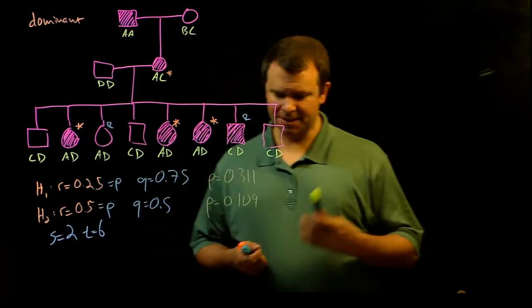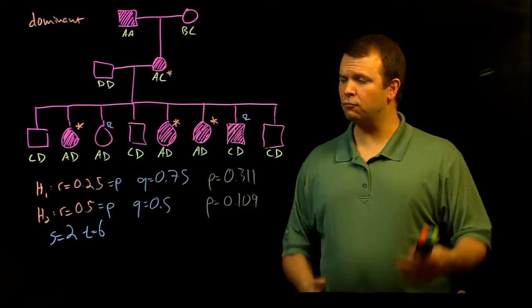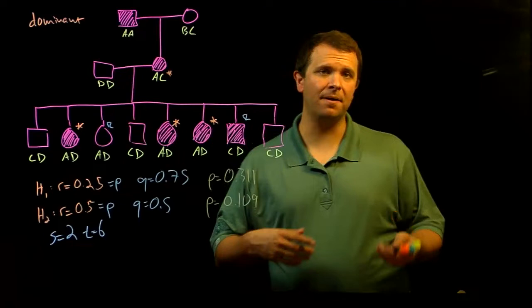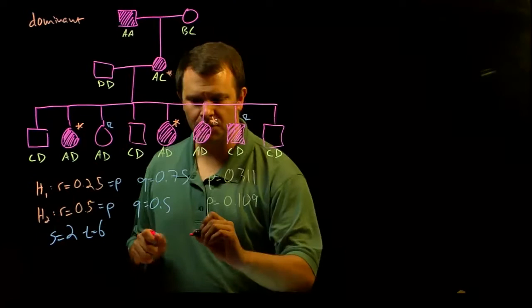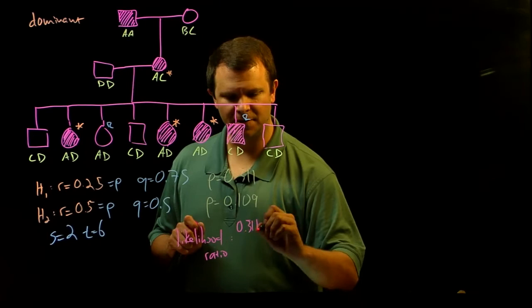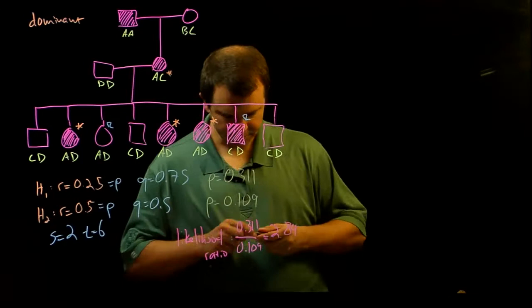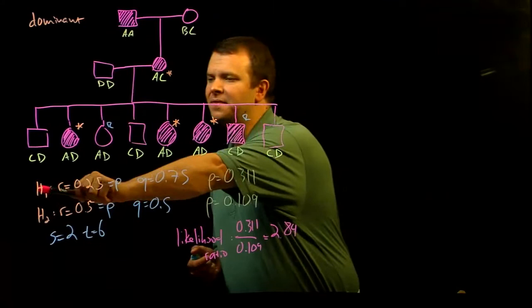And so it's clear that this data is actually more probable. We are more likely to see it under hypothesis one, with this particular strength of linkage, as opposed to hypothesis two, where these two genes are unlinked. And so we actually represent this ratio as a ratio called the likelihood ratio. And so it's 0.311 over 0.109 is approximately 2.84, which is to say that it is approximately three times more likely that we would see this outcome under this hypothesis than under the second hypothesis.